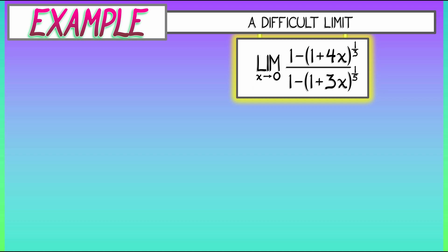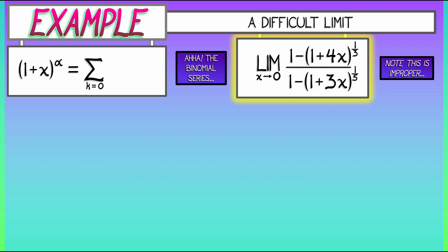Now, notice that this is an improper limit. If I substitute in x equals zero, I get zero over zero. But, we can think about this from a Taylor perspective. How? Aha! The binomial series. Remember how that works. That is perfectly set up for things of the form 1 plus something to the alpha.